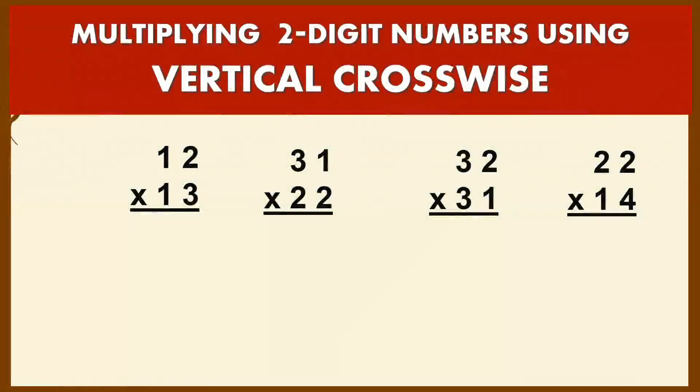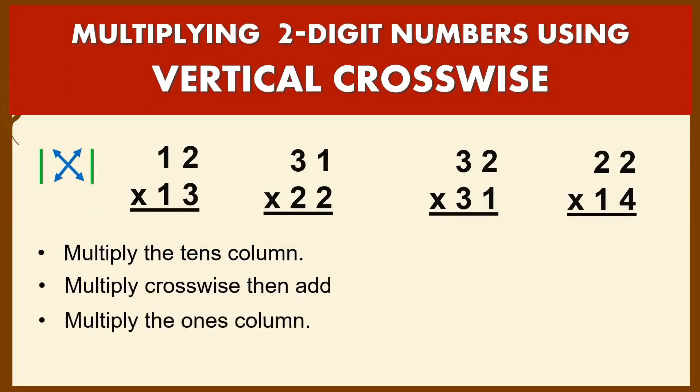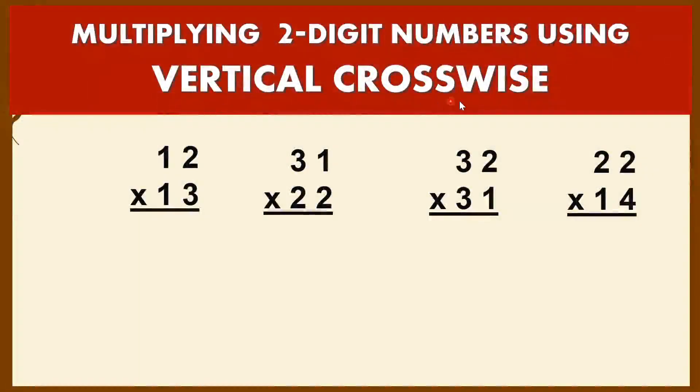Welcome back to Math Wizard Shooter. Today I'll be teaching you how to multiply two-digit numbers using vertical crosswise. To multiply using vertical crosswise, we multiply the tens column, then multiply crosswise and add them together, and lastly multiply the ones column. You can do it from left to right or right to left.